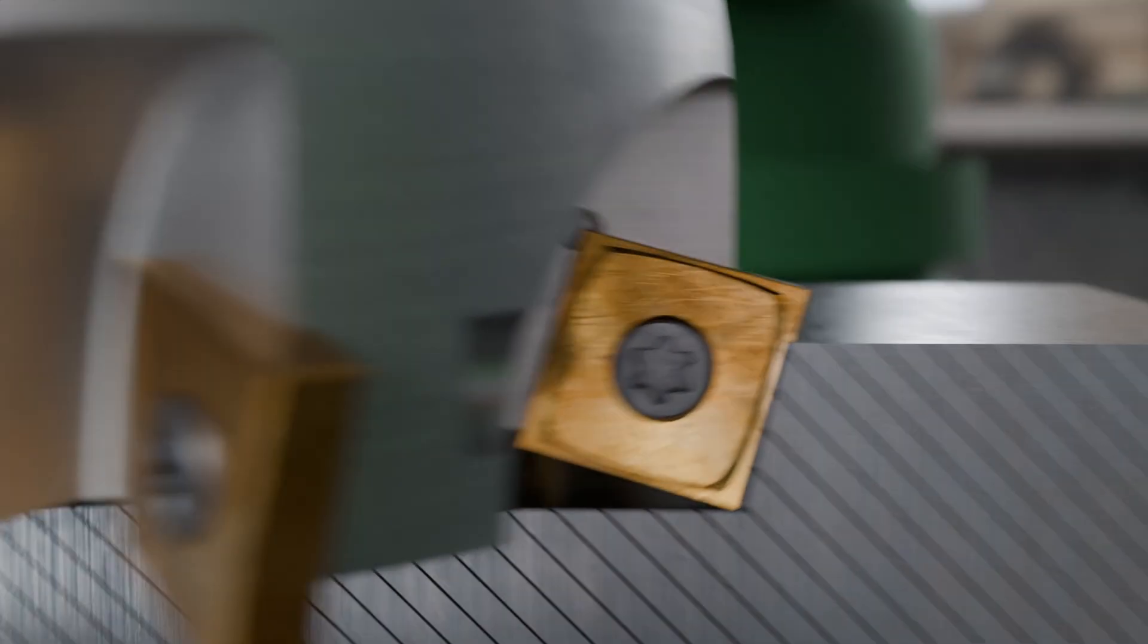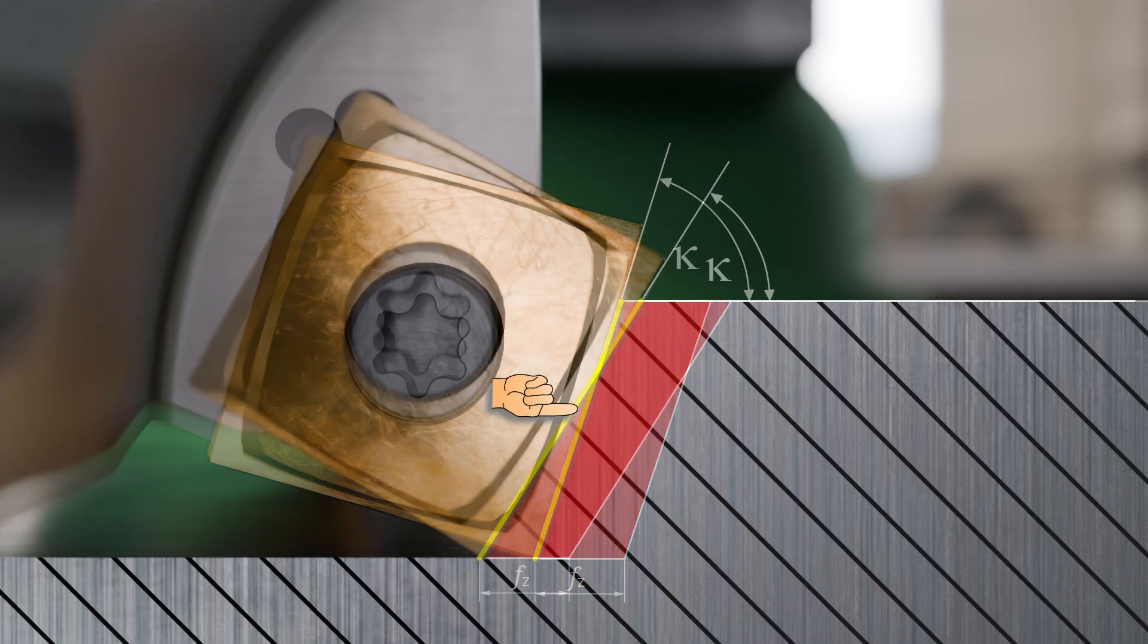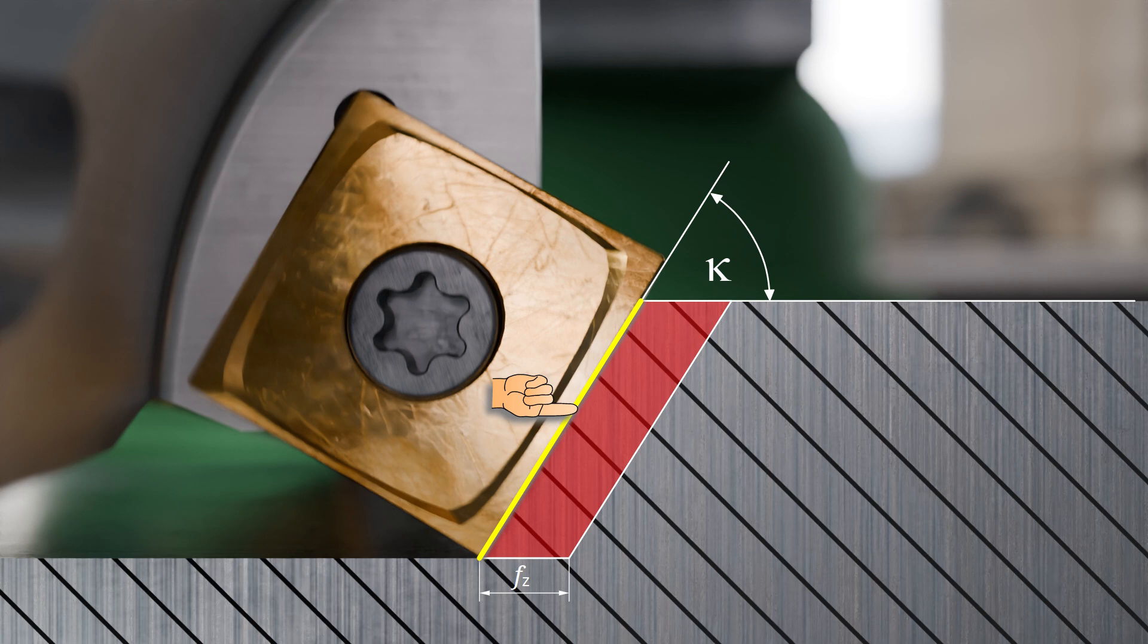During face milling, the so-called approach angle kappa between the main cutting edge and the workpiece surface is usually 45, 60, or 75 degrees. As the approach angle decreases, the effective cutting edge length in engagement increases, and the forces are distributed more evenly. As a result, the load on the cutting edge decreases.